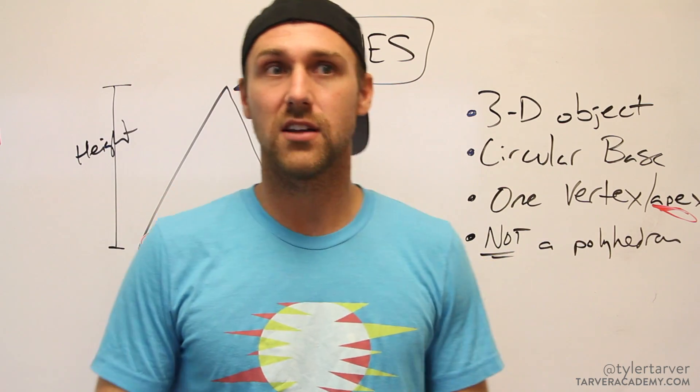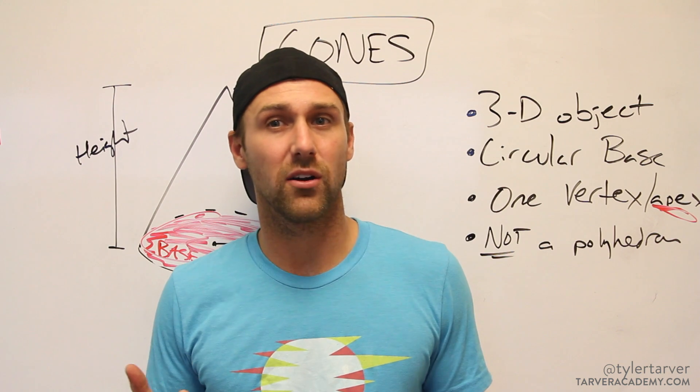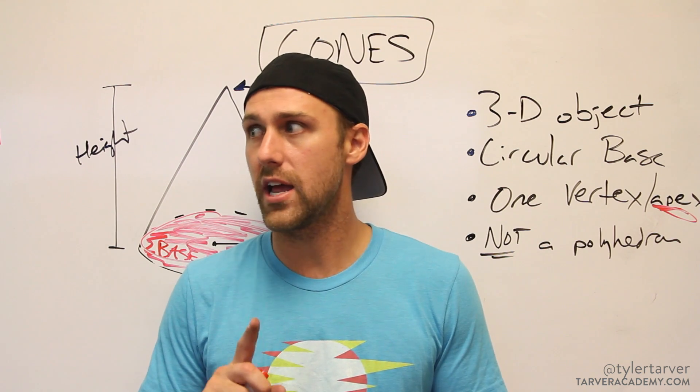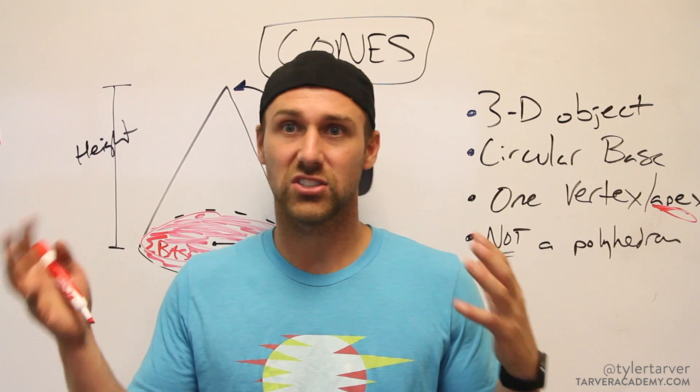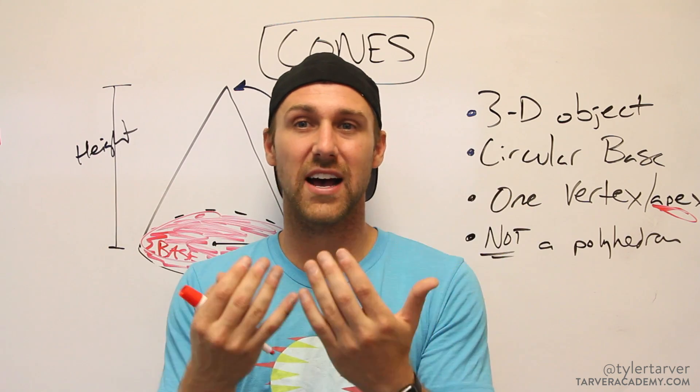Since it does not have flat sides and angles, it is not a polyhedron. That means that it's not like a prism or a pyramid. It's like a sphere or a cylinder where it's just kind of doing its own thing. It's got curved sides so we can't say it's a polyhedron.